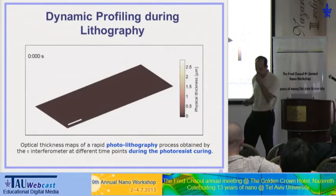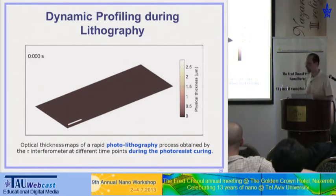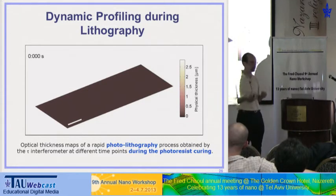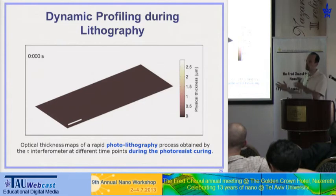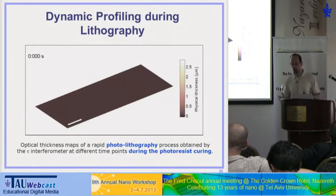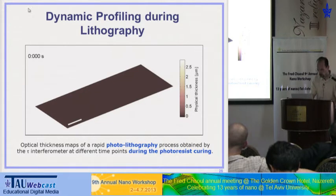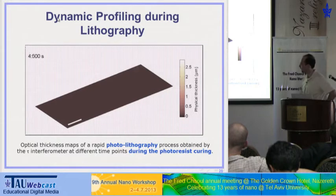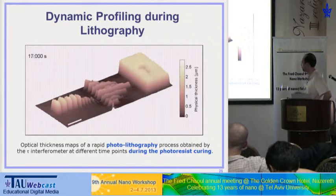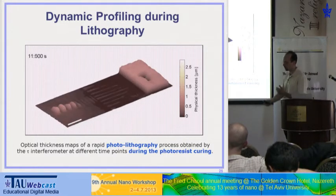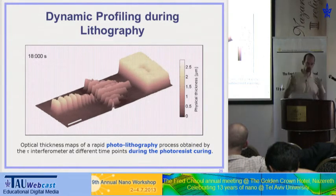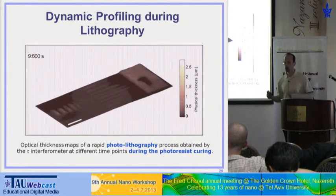Furthermore, we are able to image lithography processes in real time. We built a simple photolithography process integrated into our system in the lab — just to show the potential, as this can be integrated into any lithography process since it's a simple module sitting outside in front of the optical camera. This is a photolithography process of a mask containing an arrow, and we get the optical thickness in real time while the curing of the photoresist happens. It's a quite nice tool for non-destructive testing after manufacturing for nanofabrication, and also during manufacturing without interfering with the lithography process.